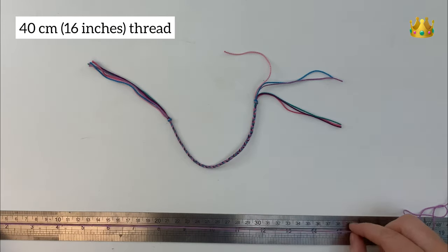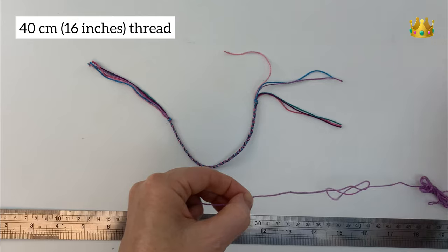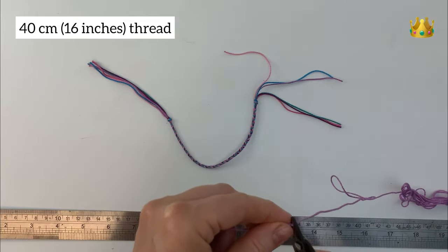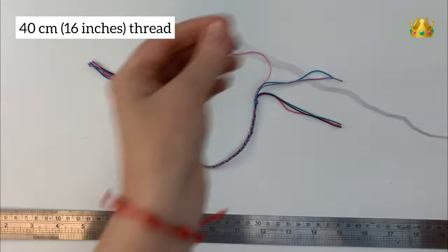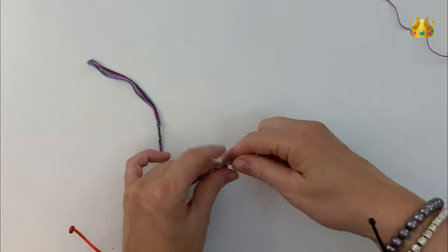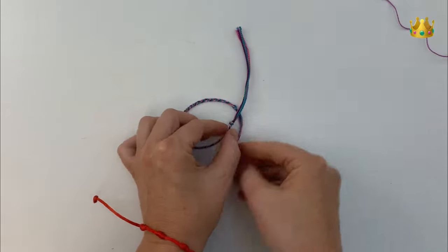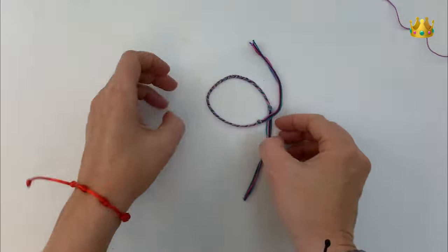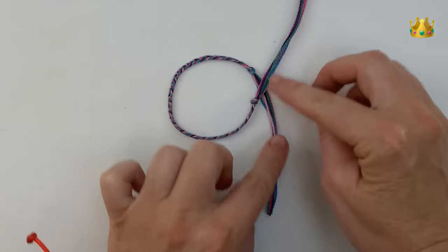For our sliding knot we're using about 40cm of thread. We lay our bracelet down with the cords overlapping and want to leave a little bit of a gap in between the two knots here. That's where we're going to place our sliding knot.